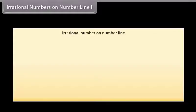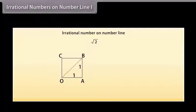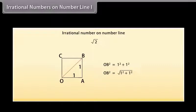Irrational numbers on number line. Now we will learn to locate an irrational number on a number line. Let us see where square root 2 is located. For this, we will first consider a unit square OABC with each side 1 unit in length. By using the Pythagoras theorem, OB² = 1² + 1², so OB = √(1² + 1²) = square root of 2.